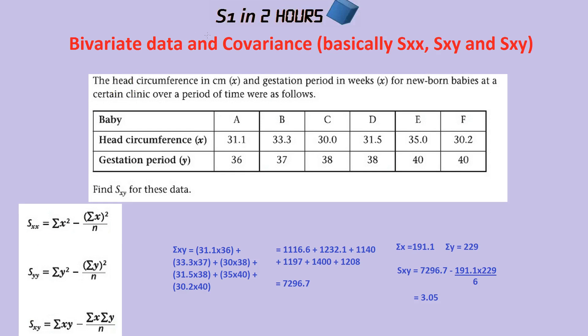Bivariate data and covariance is probably one of the easier topics in statistics, because the formula may look complicated but putting the numbers in is actually fairly simple. You just need to not be intimidated by all the different numbers. You might recognise it in exam questions as SXX or SXY — it's basically measuring how, as one variable varies, does the other vary? How varied is the data essentially?